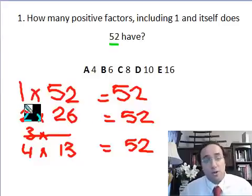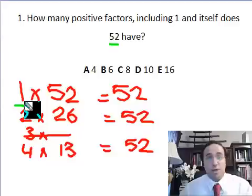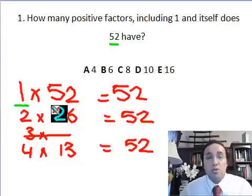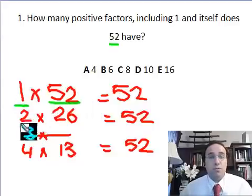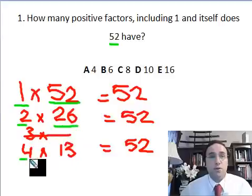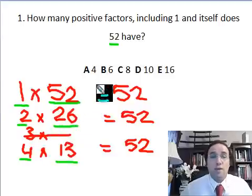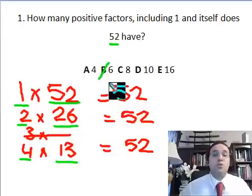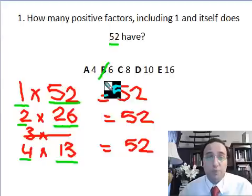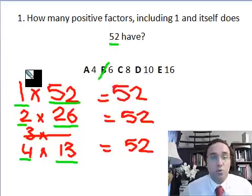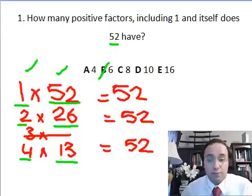So what are the positive factors? They are these numbers, the numbers that multiplied by each other give me 52. So 1, 52, 2, 26, 4, and 13. We have 6 numbers, so the answer is B. So the number 52 has 6 positive factors including 1 and itself.